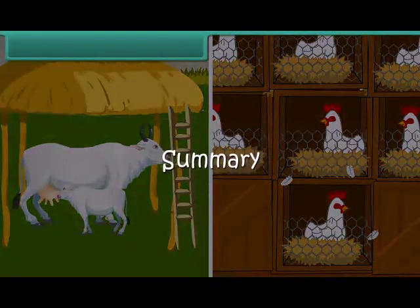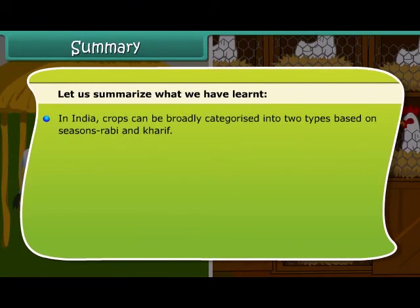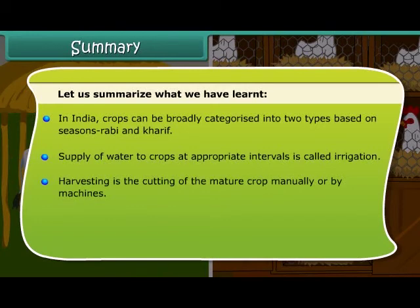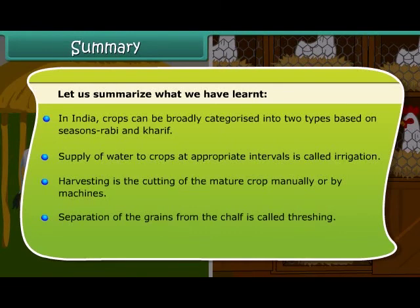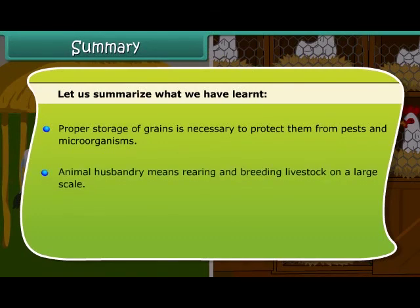Let us summarize what we have learned. In India, crops can be broadly categorized into two types based on seasons: Rabi and Kharif. Supply of water to crops at appropriate intervals is called irrigation. Harvesting is the cutting of the mature crop manually or by machines. Separation of the grains from the chaff is called threshing. Proper storage of grains is necessary to protect them from pests and microorganisms. Animal husbandry means rearing and breeding livestock on a large scale.